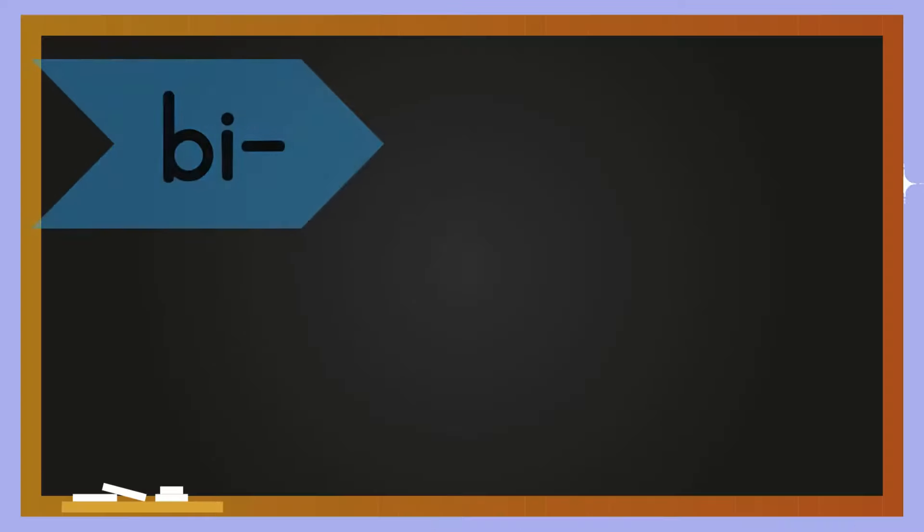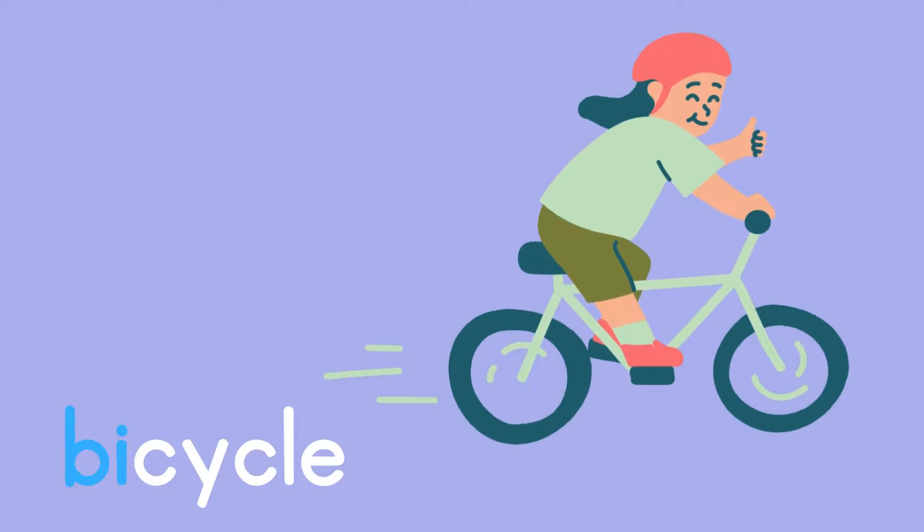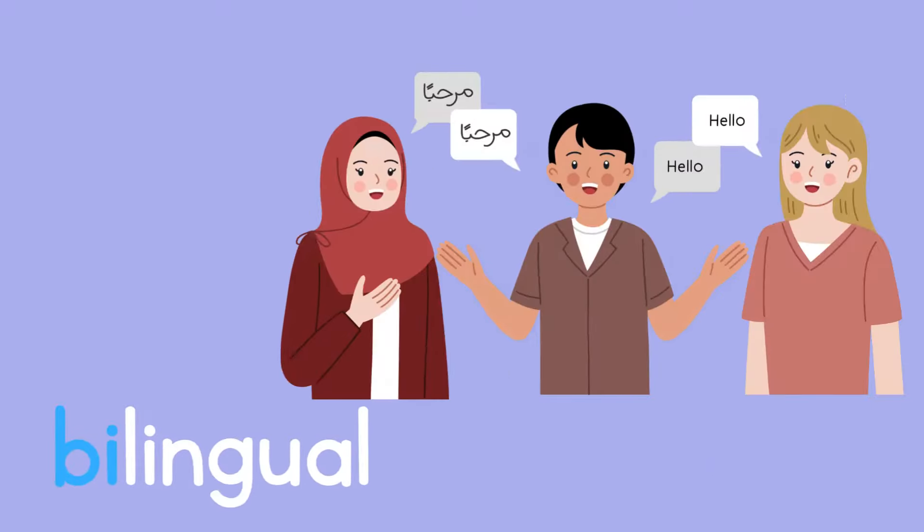Bi: means two. Bicycle is a two-wheeled cycle. Bilingual means knowing two languages. Binoculars.